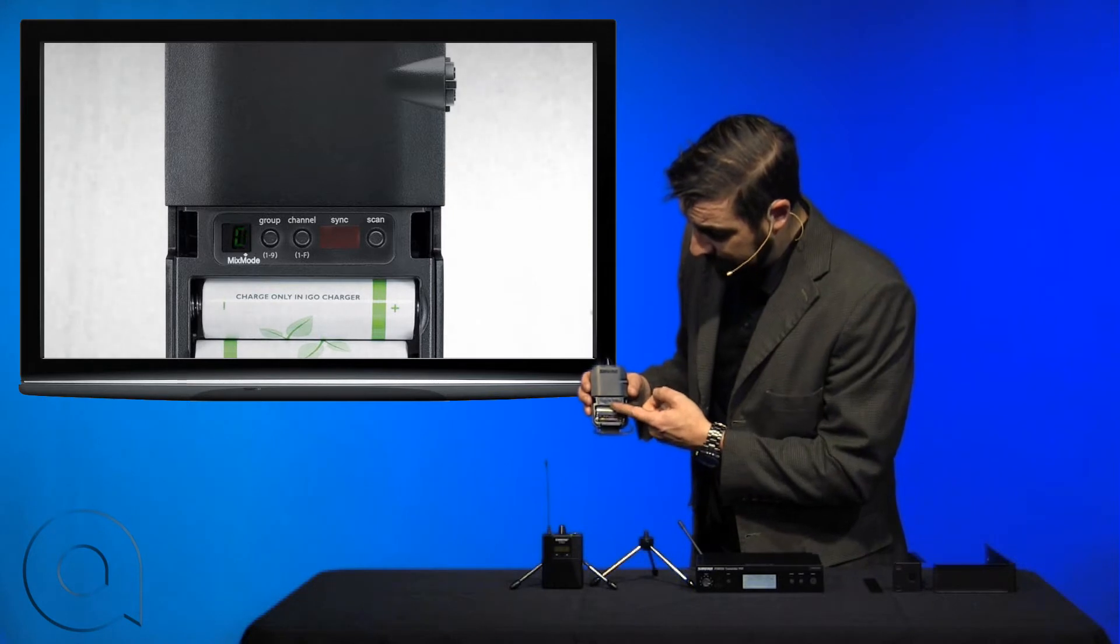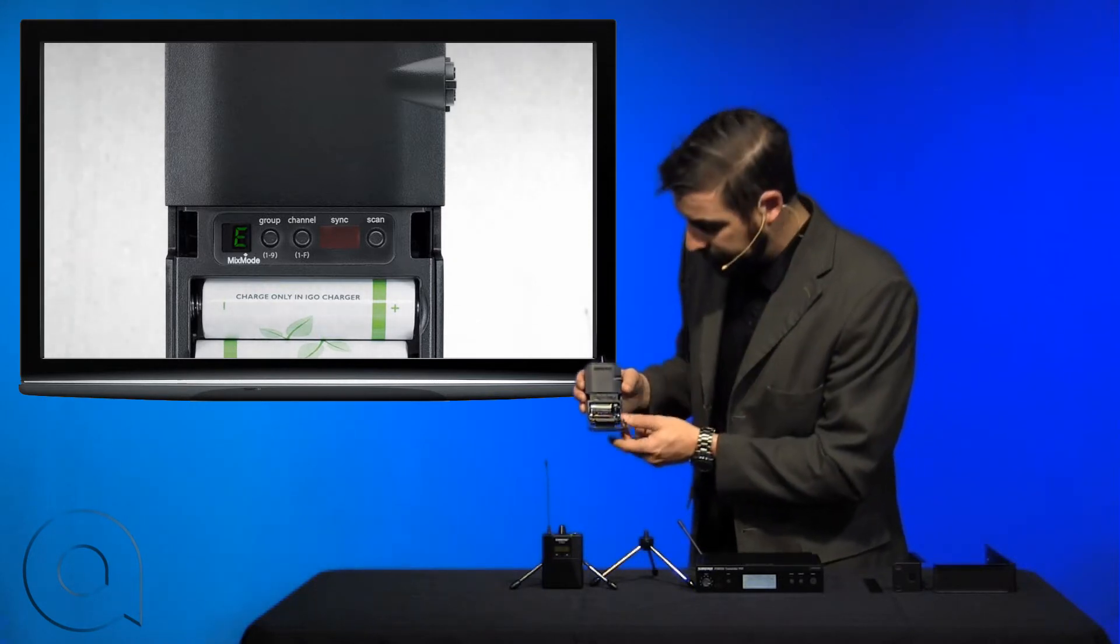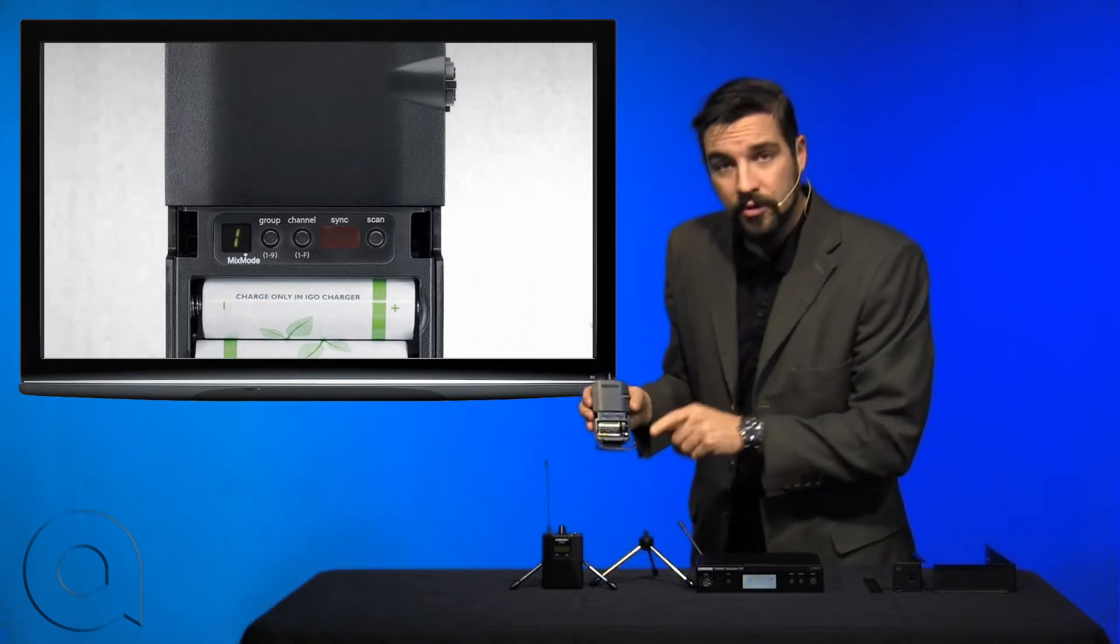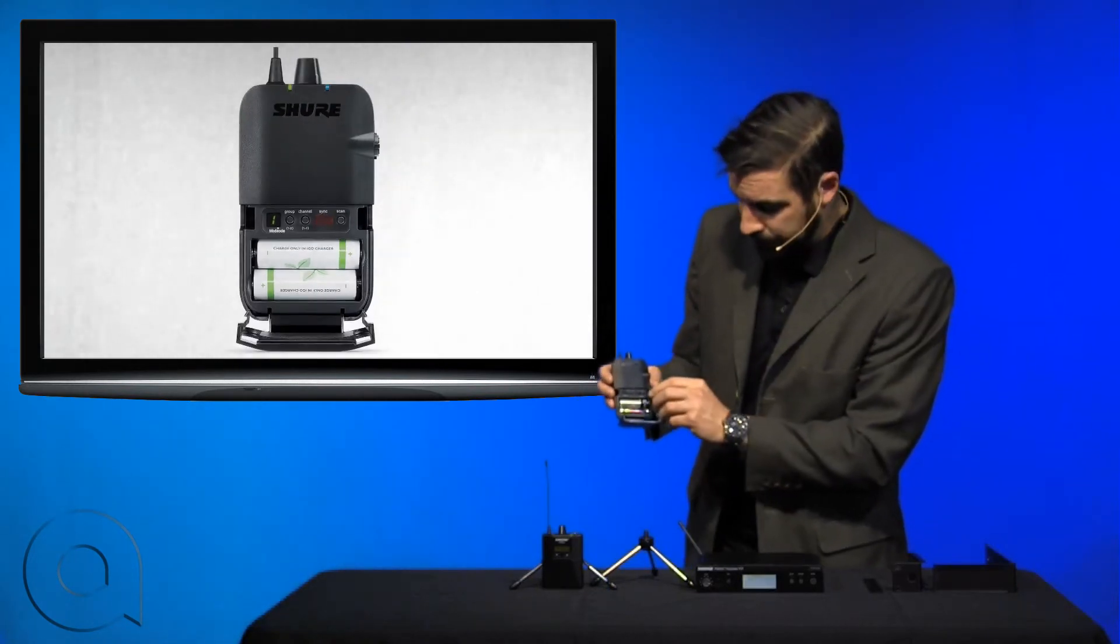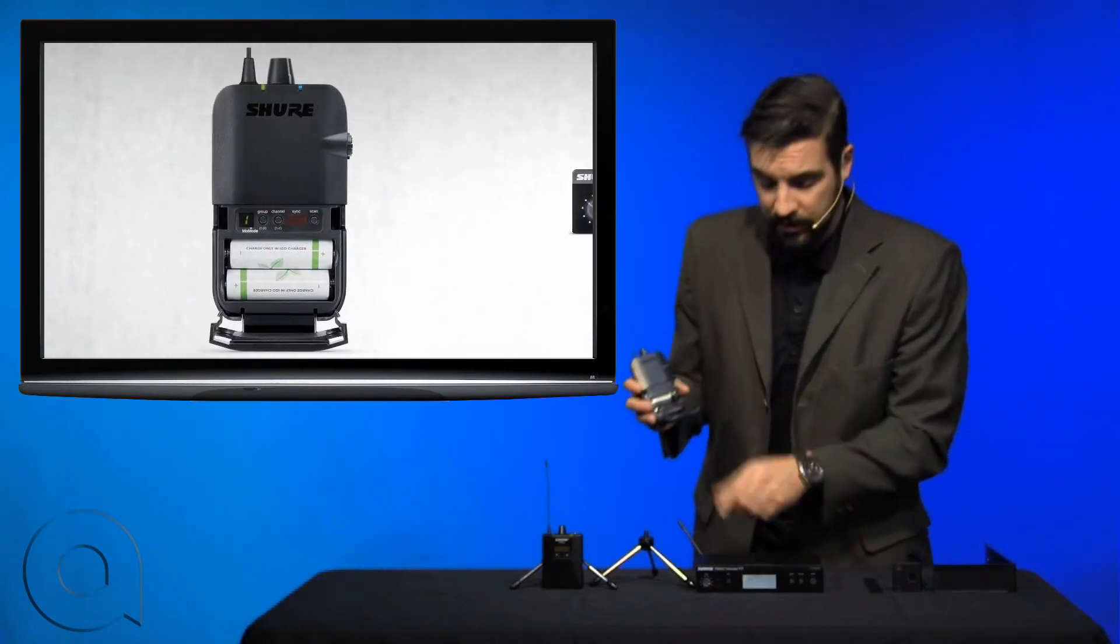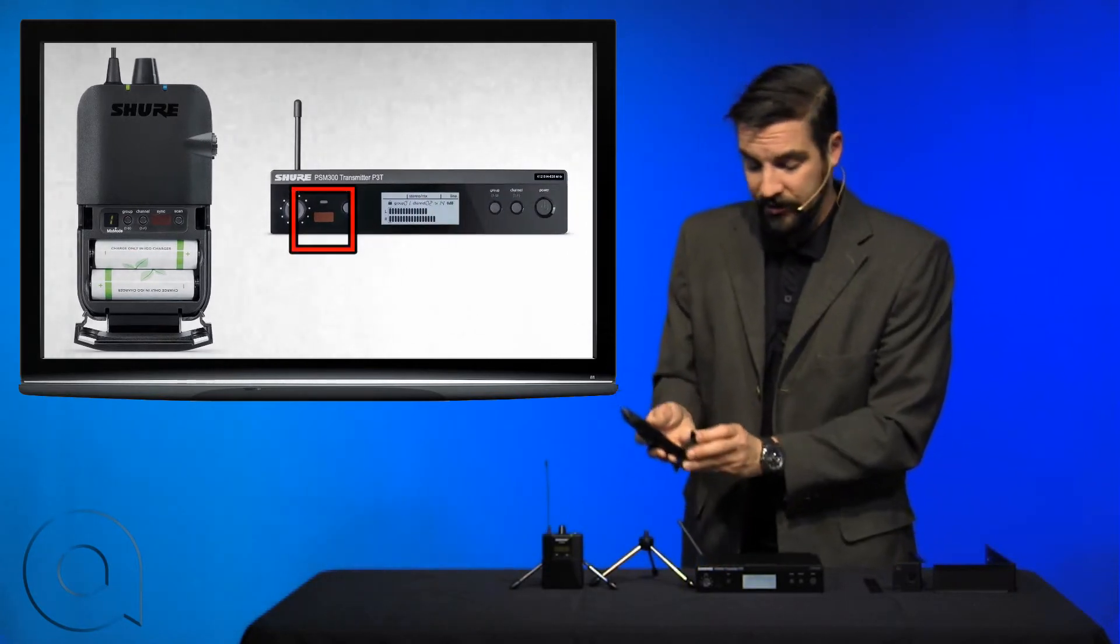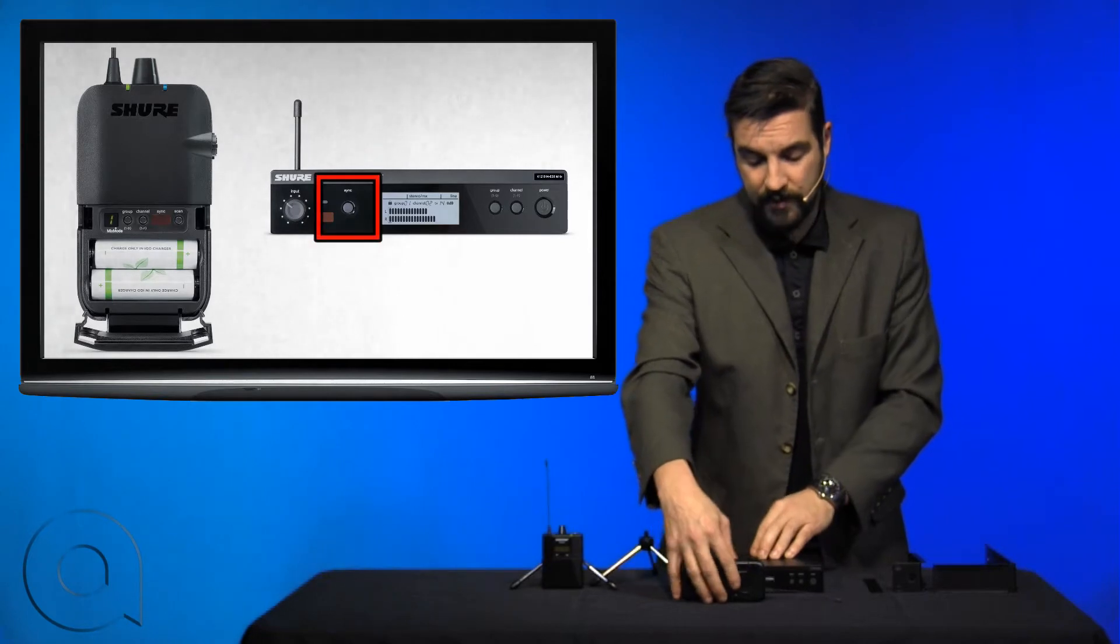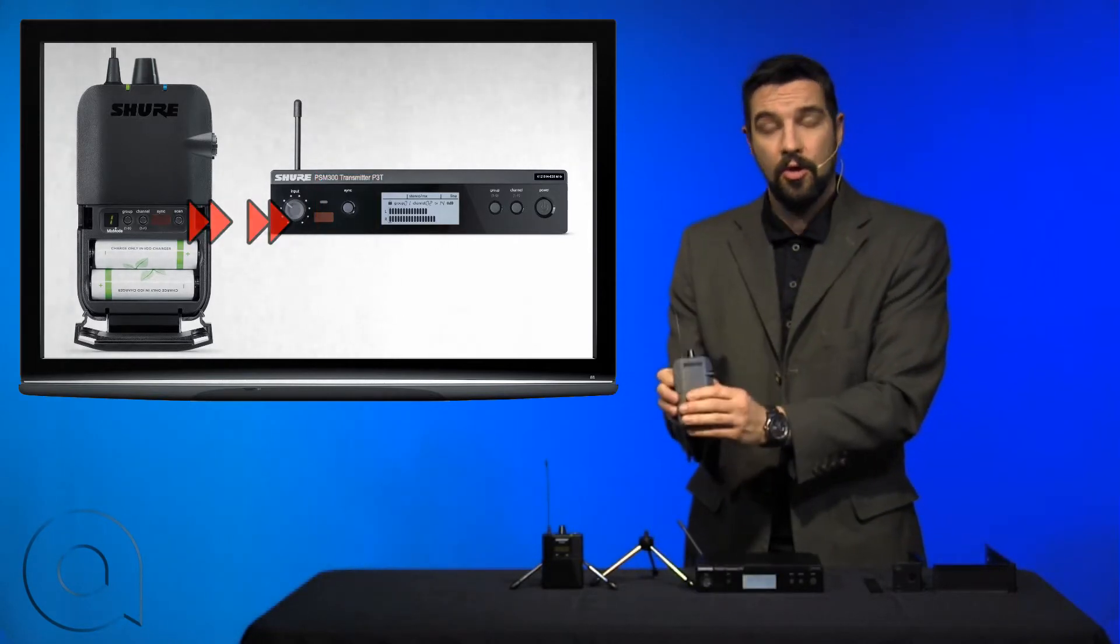Once it's finished scanning all of the groups and the channels, it will settle down and once it does that we can begin the process of syncing it. You see our sync window here and there's a matching one on the transmitter. Simply place it in front, hit the sync button and after a few seconds we are set to go.